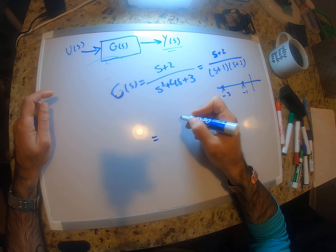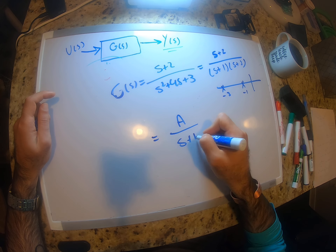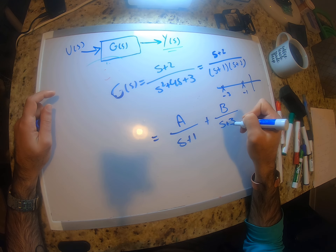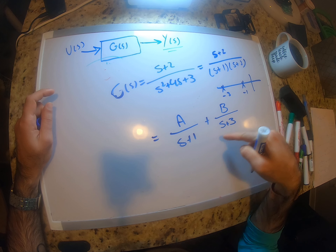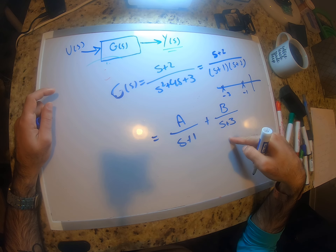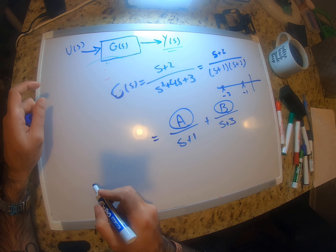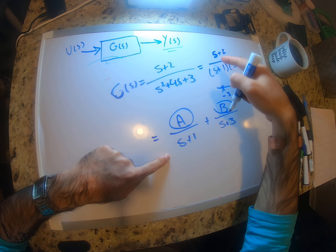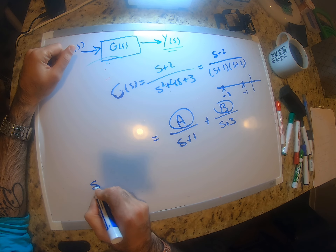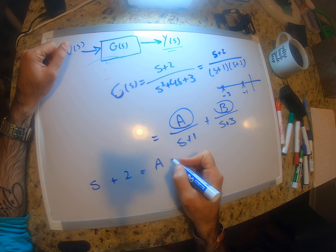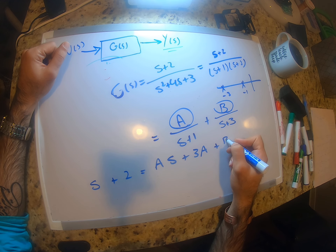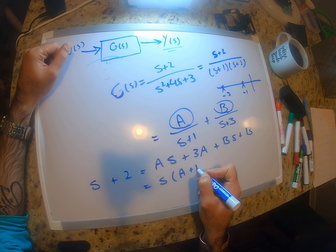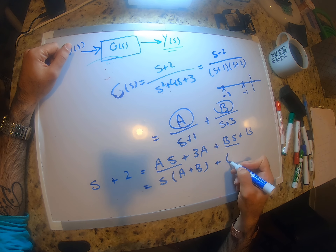To confirm this, we can decompose G(s) using partial fraction expansion: A over (s + 1) plus B over (s + 3). To find A and B, the numerators must be equal, so (s + 2) equals A(s + 3) plus B(s + 1). Expanding and factoring out s gives us (A + B) as the coefficient of s, and (3A + B) as the constant.